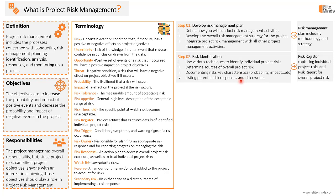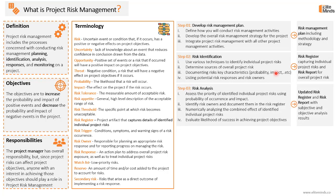Once we have the risk management plan, we identify the project risks using various techniques such as brainstorming or SWOT analysis. We determine the sources of overall project risk, document each risk's key characteristics, and at minimum determine the probability and impact for each risk. We also list potential risk responses and risk owners. The outcomes of this step are two important project artifacts: the risk register, capturing all individual project risks, and the risk report for the overall project risk.